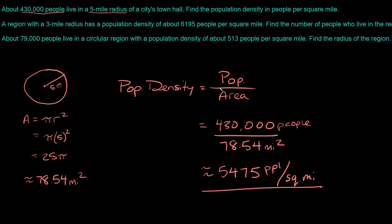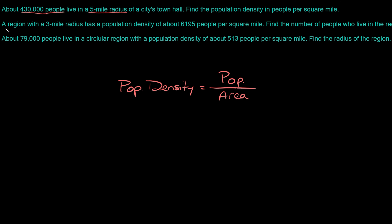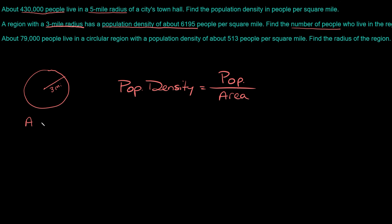Now let's do the second example where we solve for a different part of the formula. The second problem says a region with a three-mile radius has a population density of about 6,195 people per square mile. Find the number of people who live in the region. This time we want to find the population. Since it mentions radius, we have a circle with a radius of three miles, so the area equals pi times three squared, which equals pi times nine, approximately 28.27 square miles.